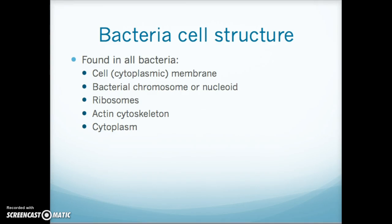When we look at the cell structure of a bacterial cell, all bacteria have a cell or cytoplasmic membrane inside of that wall. They have a bacterial chromosome or nucleoid, which is the genetic material they carry. They will all have ribosomes, which allow them to make their own proteins. They also have an actin cytoskeleton — an inner framework or webbing that keeps everything in place — and cytoplasm, the viscous gel-like substance that everything inside the cell sits in.